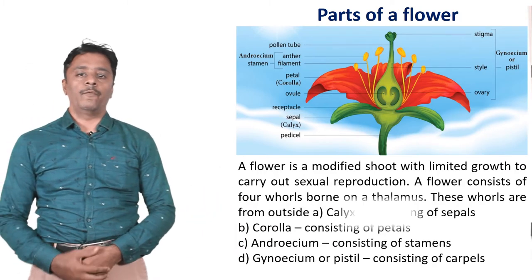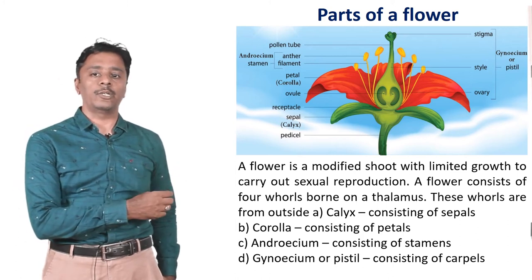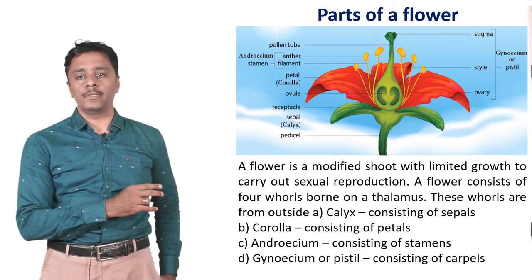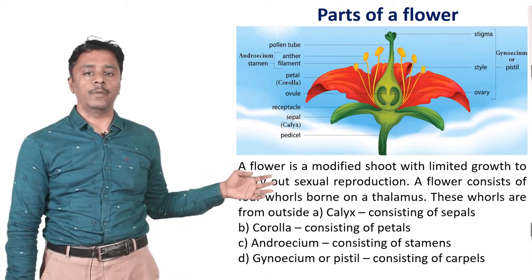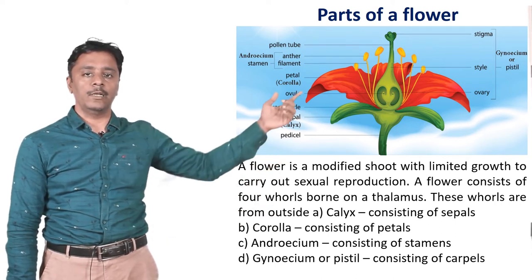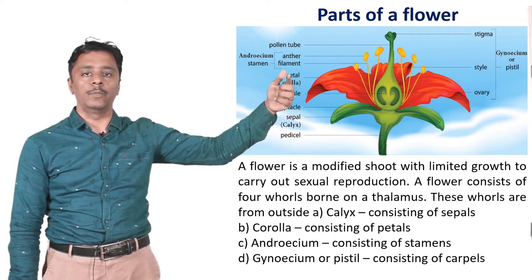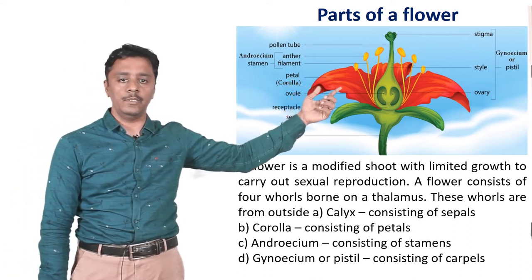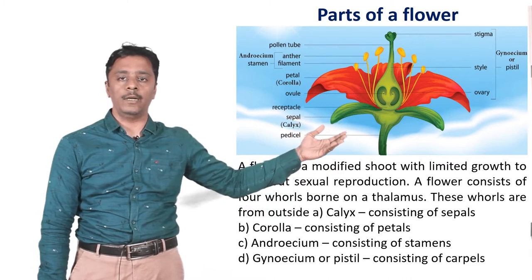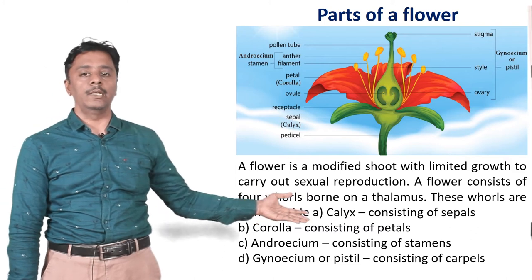The flower is a modified shoot with limited growth to carry out sexual reproduction. A flower consists of four whorls born on a thalamus. These whorls are from outside: A. Calyx, consisting of sepals; B. Corolla, consisting of petals; C. Androecium, consisting of stamens — those are the yellow color things; and D. Gynoecium or pistil, consisting of carpels, that is the ovary and all parts under it.